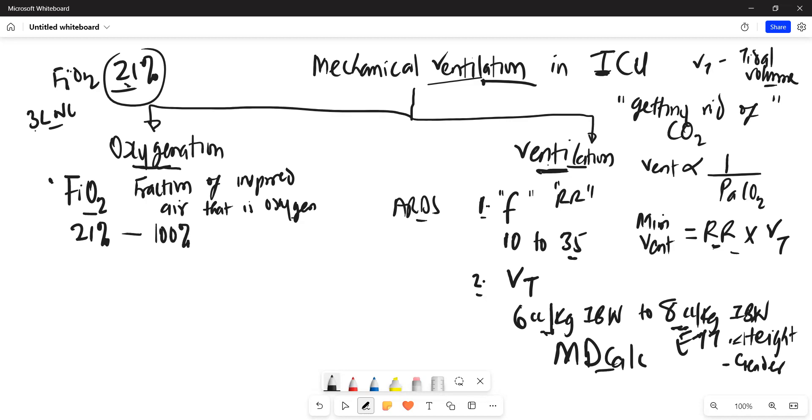So depending on how bad the hypoxemia of that patient is, we can set it all the way to 100%. And of course, it's okay to start with 100% when you are initiating the mechanical ventilator. But of course, we want to wean it down below 60% because of risk of oxygen toxicity. So we want to avoid oxygen toxicity in those patients.